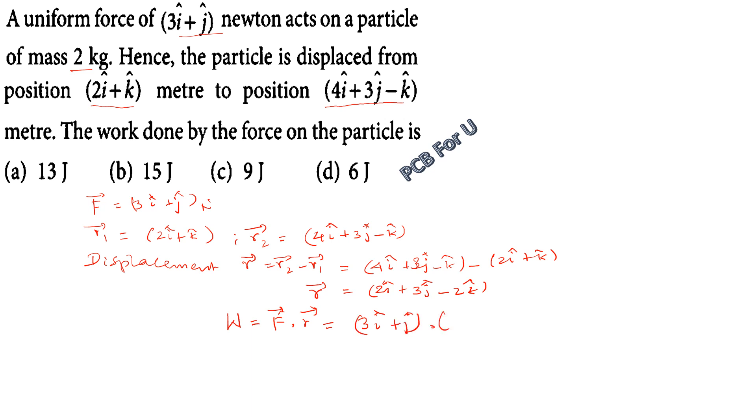The work is F dot r. So 3i cap plus j cap dot 2i cap plus 3j cap minus 2k cap. This equals 3 times 2 plus 1 times 3, which equals 6 plus 3 equals 9.